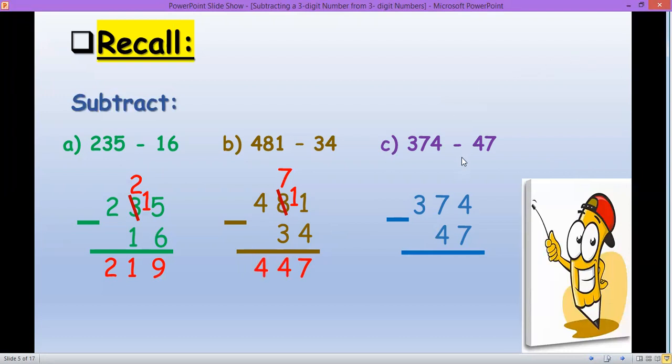On the third question, we have 374 minus 47. Again, four cannot take away from seven, or seven cannot take away from four because four is smaller than seven. So four will borrow from seven, and then this seven on top will become six. 14 minus seven is seven, six minus four is two, and then we bring down three.